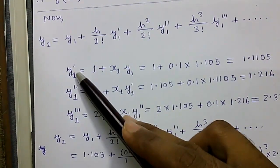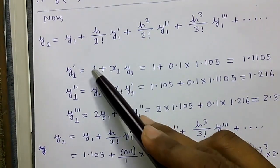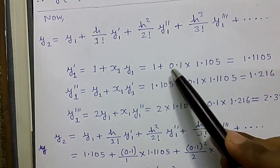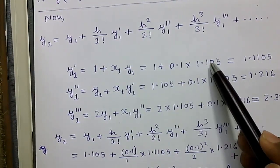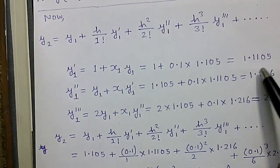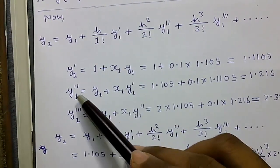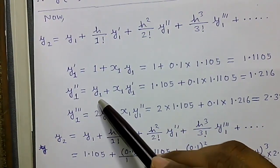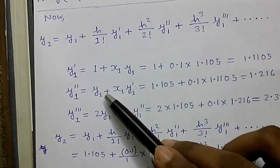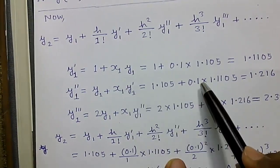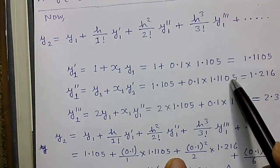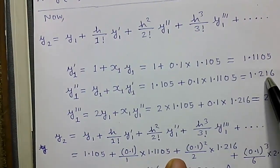Next we will calculate the y'1 value using x1 and y1 values. So using the first formula, 1 + x1·y1 = 1 + 0.1·1.105 = 1.1105. Next y''1 = y1 + x1·y'1. y1 is 1.105 plus x1 is 0.1 into y'1 value, which equals 1.216.